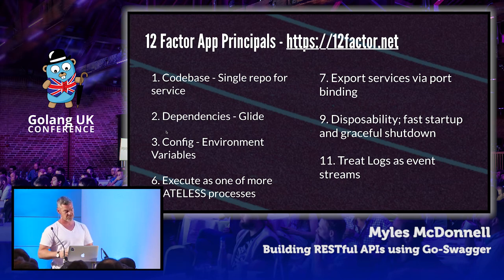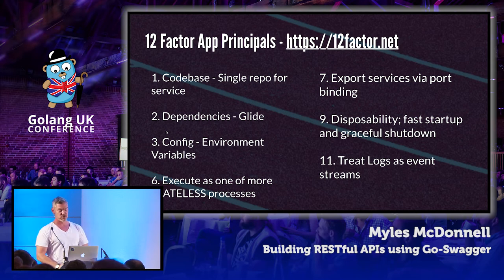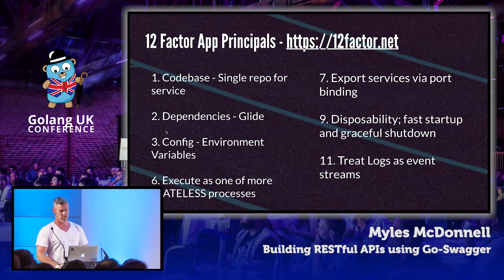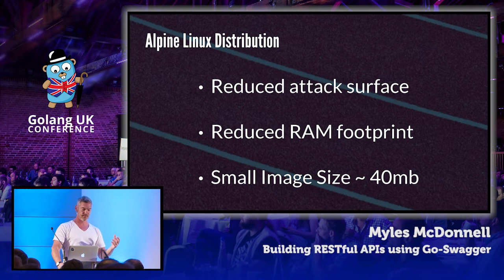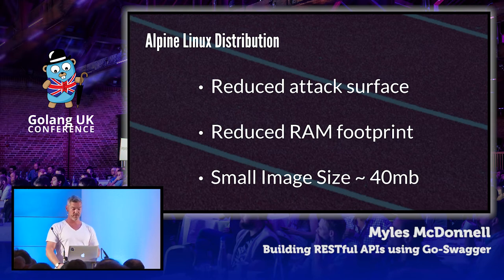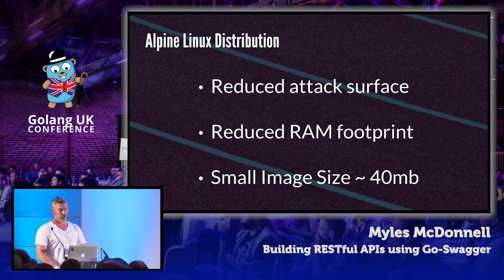Export services via port binding — we do, it's an HTTP server. Disposability: fast startup and graceful shutdown — it is very fast at startup; I haven't confirmed the graceful shutdown behaviour with Go-Swagger so perhaps some work to do there. Treat logs as event streams — our logging is all to standard out and it's time series, effectively. Why use Alpine Linux? It's a very stripped-down distro — very small, runs very few packages and services, so you have a reduced attack surface and reduced RAM footprint. With a Go-Swagger server you'll get your Docker image down to about 40 megabytes versus 600 megabytes or more with full Ubuntu.